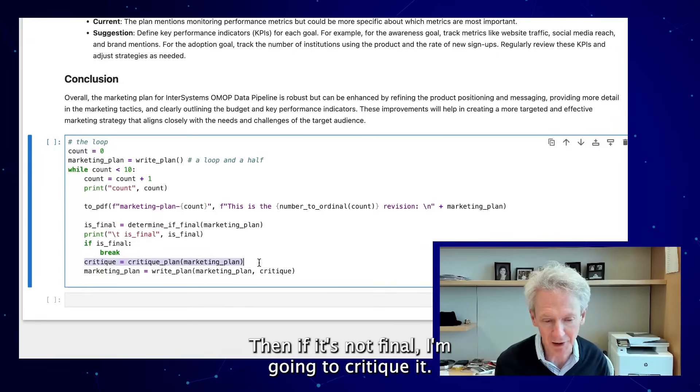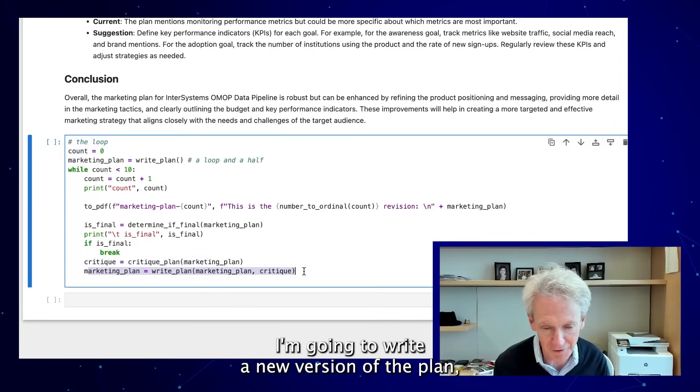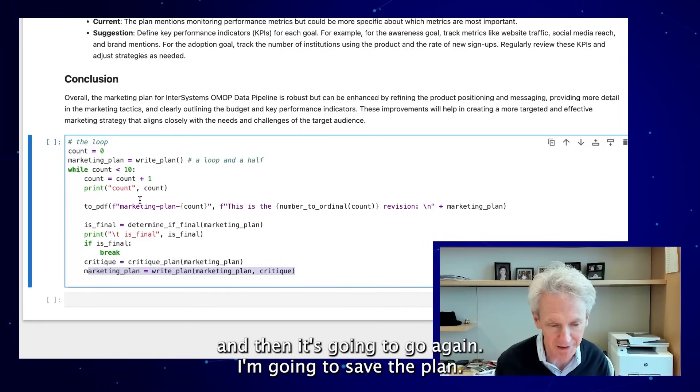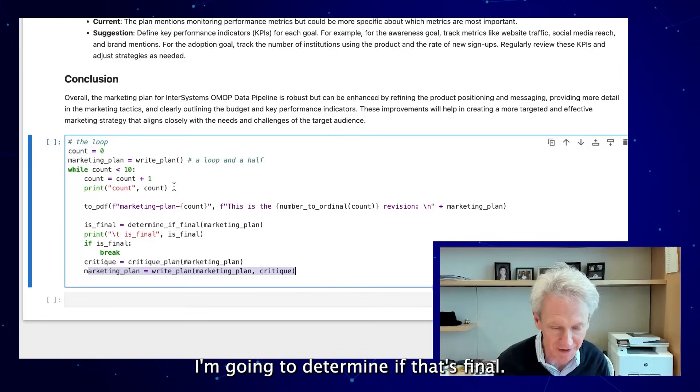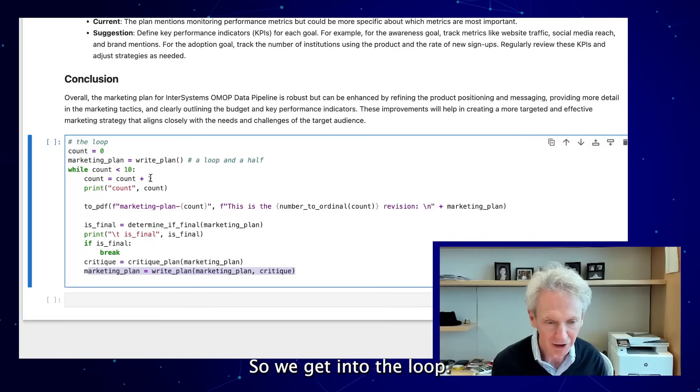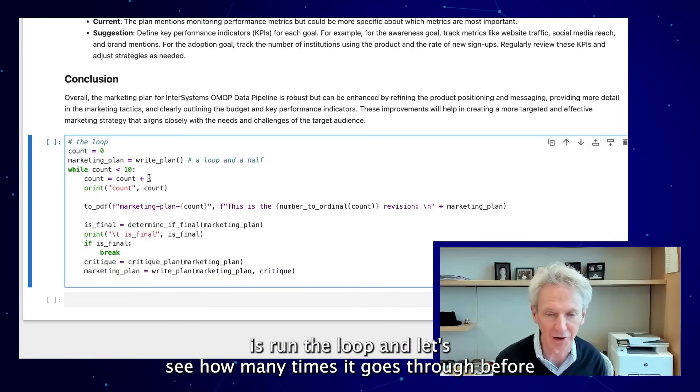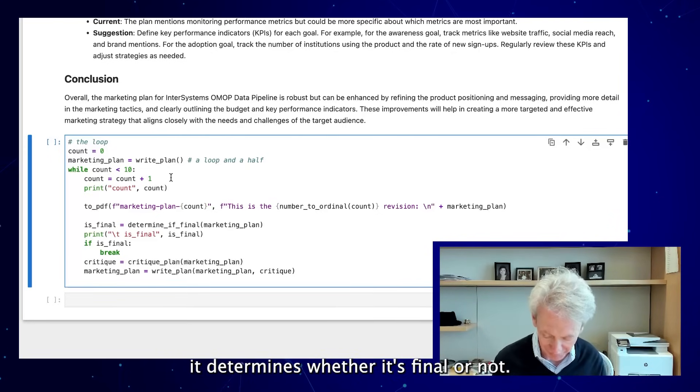If it's not final, I'm going to critique it. I'm going to write a new version of the plan, and then it's going to go again. I'm going to save the plan. I'm going to determine if that's final, so we get into the loop. What I'm going to do now is run the loop and let's see how many times it goes through before it determines whether it's final or not.